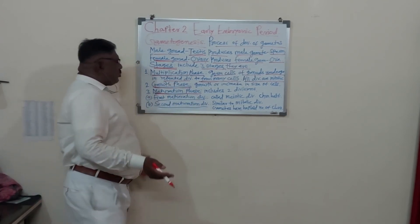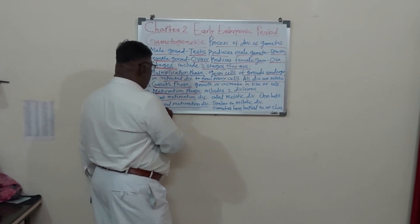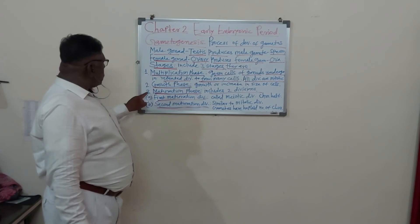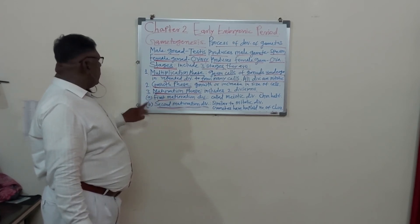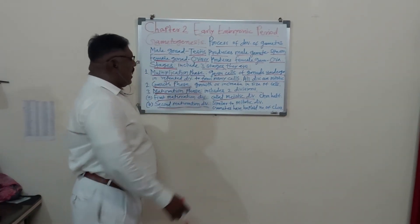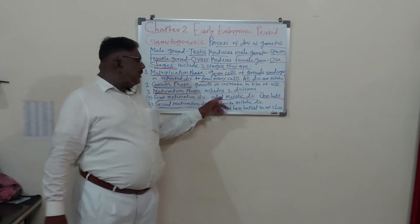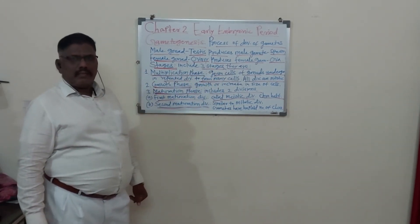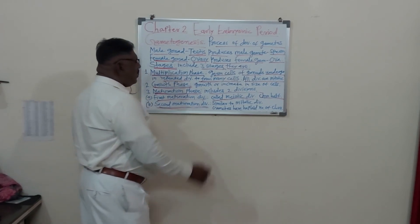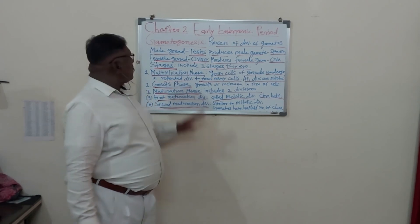The next stage is the growth phase: there is growth or increase in size of the cell. Then the next phase is the maturation phase, which includes two divisions — first maturation division and second maturation division. In the first maturation division, it is also called the meiotic division, and the chromosome numbers are reduced to half. If the chromosomes are 24, in this stage the chromosome number becomes 12. This is also called the reduction phase. In the second maturation division, gametes have the haploid number of chromosomes.